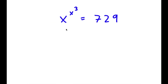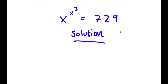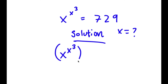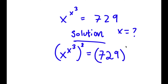In this problem, I have x to the power of x to the power of 3 is equal to 729. For my solution, I want to find the value of x, so I'm going to start by taking the power of 3 on both sides. So now I have x to the power of x to the power of 3 to the power of 3 is equal to 729 to the power of 3.